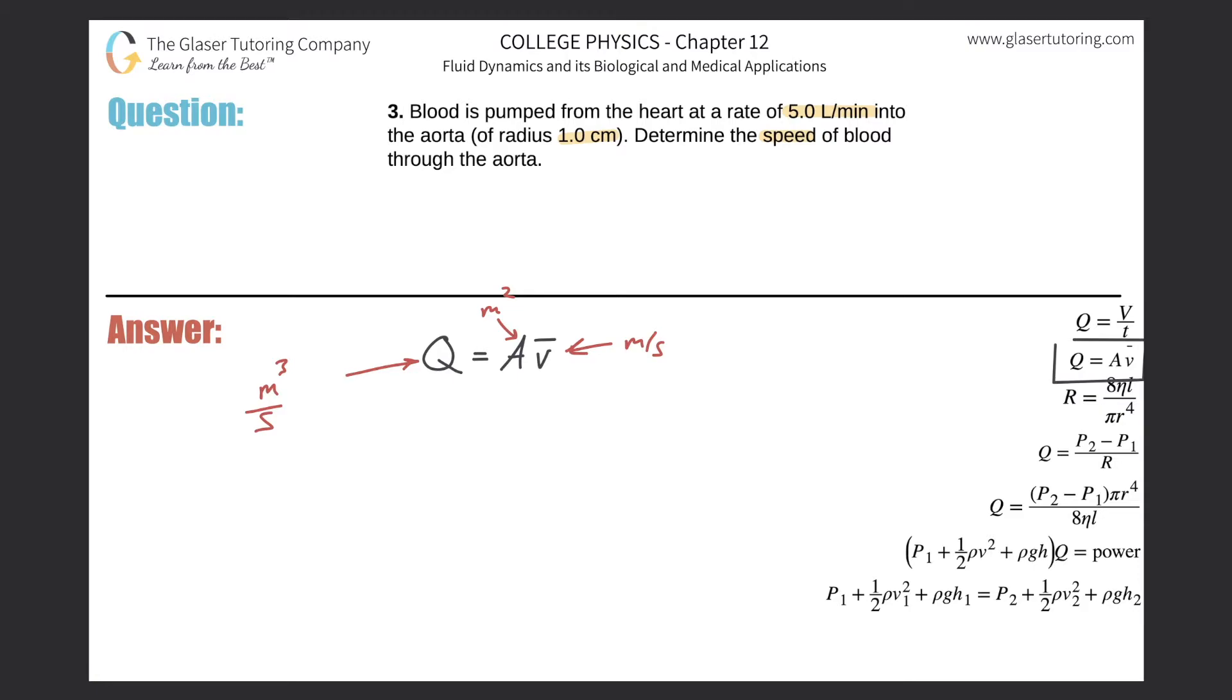They told us a volume flow rate of 5 liters per minute, just not in the right units. Let's do a quick conversion: 5 liters per 1 minute. We need this in terms of cubic meters per second. Let's convert to cubic meters. There's 1000 liters in 1 cubic meter, so